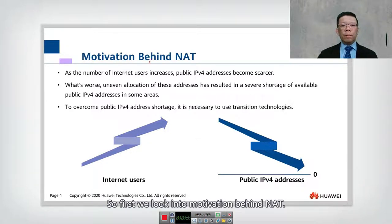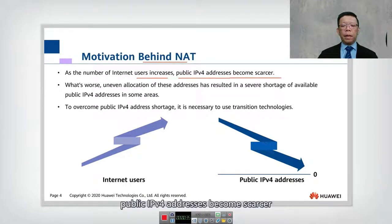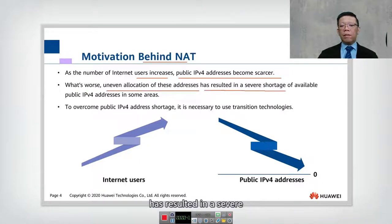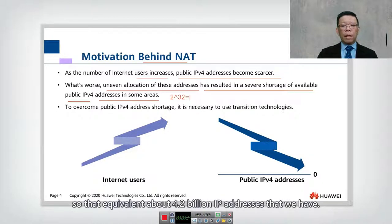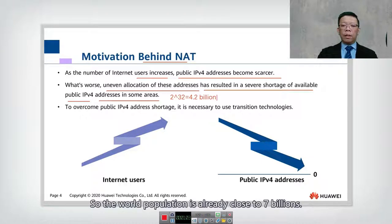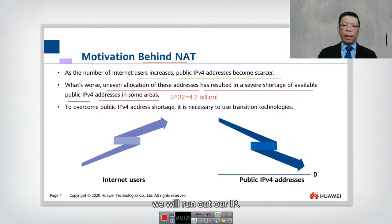The motivation behind NAT: as the number of internet users increases, public IPv4 addresses become scarce. The allocation of these addresses has resulted in a severe shortage in some areas. In IPv4 we only have 2 to the power of 32, equivalent to about 4.2 billion IP addresses, but the world population is already close to 7 billion, so if everyone uses IPv4 at the same time we will run out.